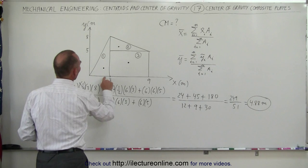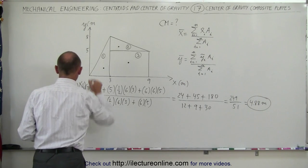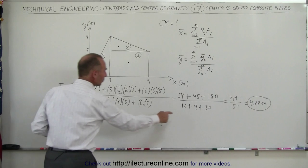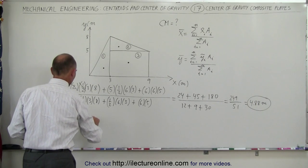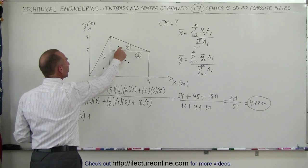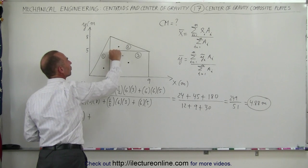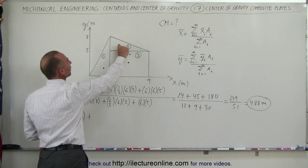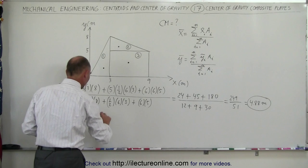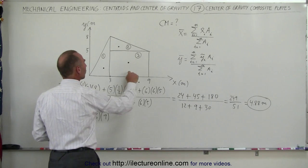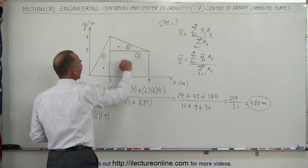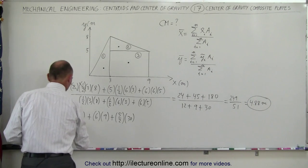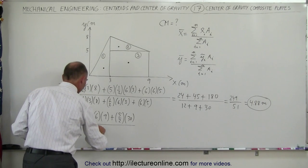Now we do the same for the y-coordinate. In the y-direction for piece 1, it will be one-third the distance from the base to the height: one-third times 8, or 8 over 3, times the area of 12. For the y-coordinate of the second triangle, it would be one-third the distance from 5 to 8, which is 1, added to 5, giving 6 — multiplied times the area of 9. For the rectangle, the y-coordinate is halfway from 0 to 5, that's 2.5, so plus 5 over 2 times the area of 30. Divide the whole thing by the total area, which is again 51.